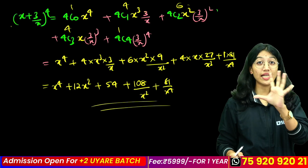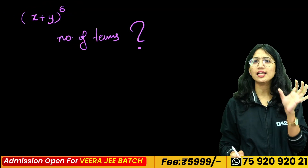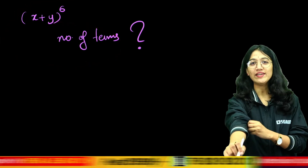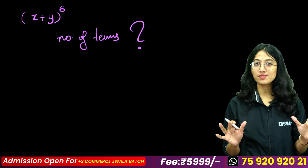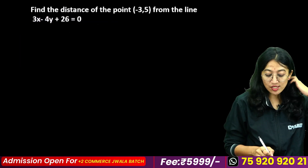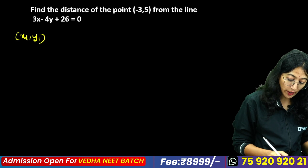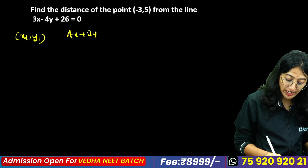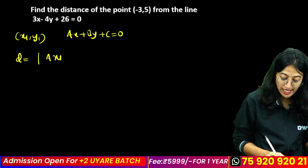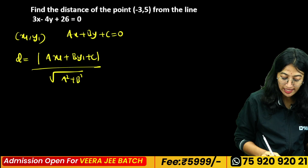Now the question: for (x + y) raised to 6, find the number of terms. Also, the distance of a point (x1, y1) from a line ax + by + c = 0 is given by the formula: modulus of (a·x1 + b·y1 + c) divided by root of (a² + b²).